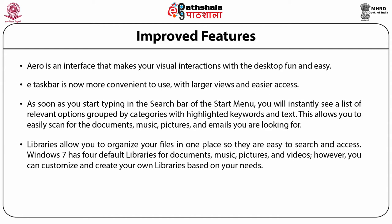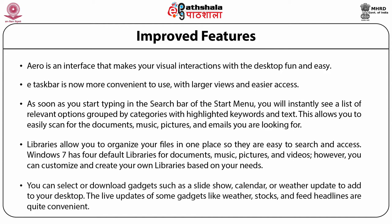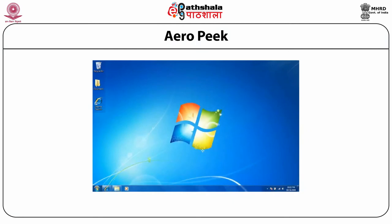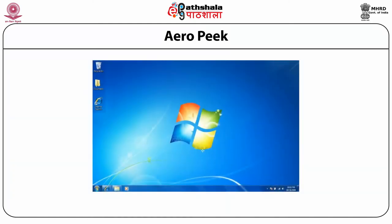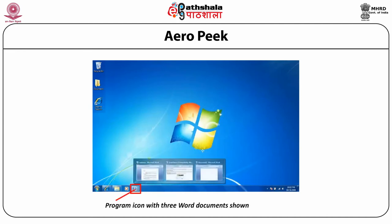Libraries allow you to organize your files in one place for easy searching and access. Windows 7 has four default libraries for documents, music, pictures, and videos, but you can customize and create your own. You can select and download gadgets such as slideshow, calendar, or weather updates to add to your desktop. Aero Peek provides a preview of windows when you place your mouse pointer over the program icon on the taskbar, useful when multiple items of the same type are open.